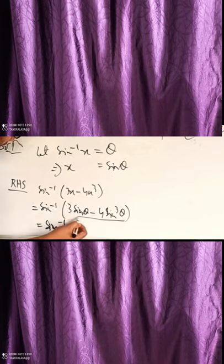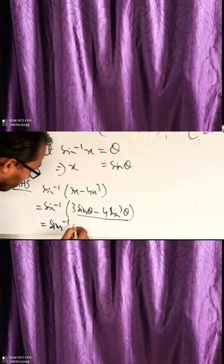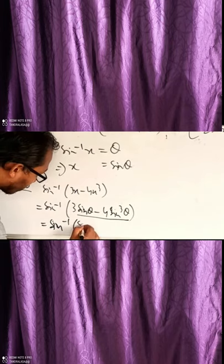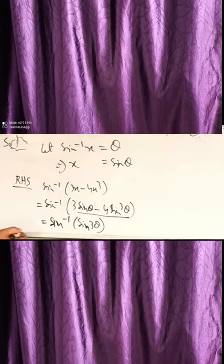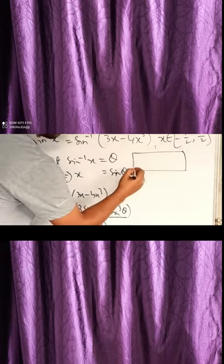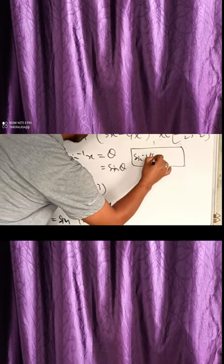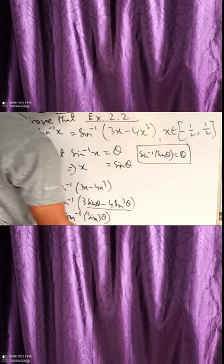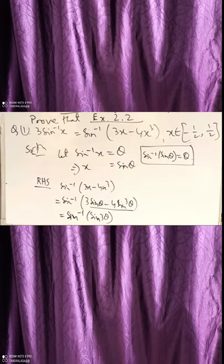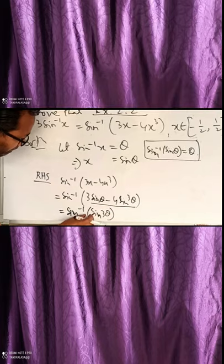We have sin⁻¹(3 sin θ minus 4 sin³θ). This expression equals sin⁻¹(sin 3θ), using the triple angle identity. And sin⁻¹(sin θ) equals θ, so this gives us θ, which equals sin⁻¹(x). Hence proved.